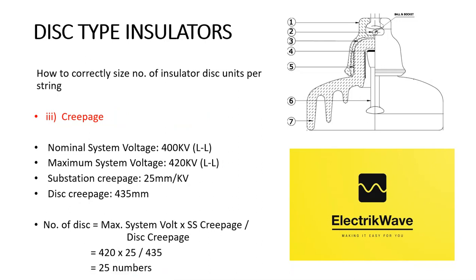Here we will calculate the number of insulator disk units per string based on creepage. Nominal system voltage is 400 kV line to line. Maximum system voltage is 420 kV line to line. Substation creepage is 25 mm per kV. Disk creepage is 435 mm. The formula: number of disks per string = maximum system voltage × substation creepage / disk creepage. This gives a requirement of 25 disks per string.